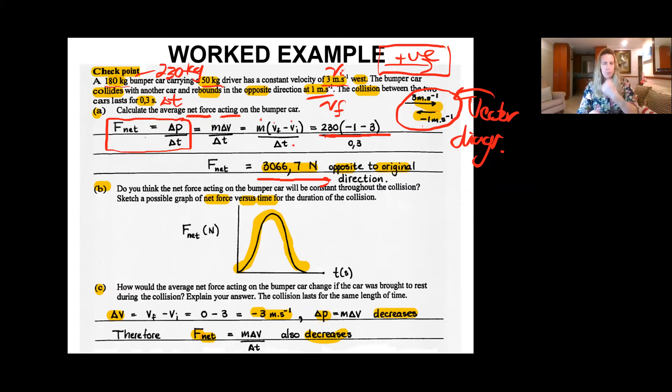So we are saying that is a net force acting in order to change that object's velocity from some initial to some final velocity. How do you think a possible net force versus time graph would look like of this collision of the bumper car with the other object?